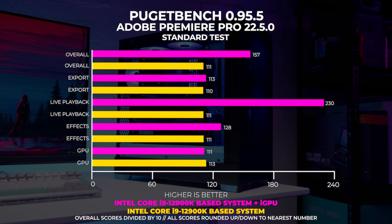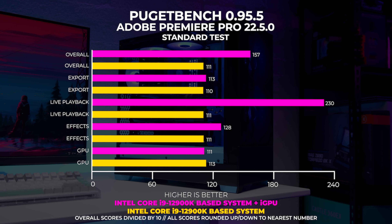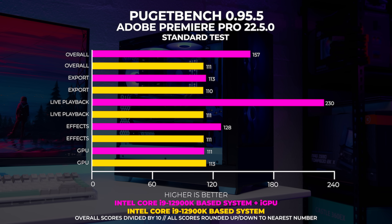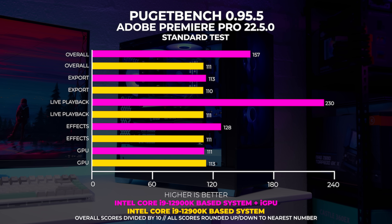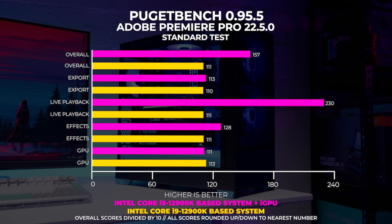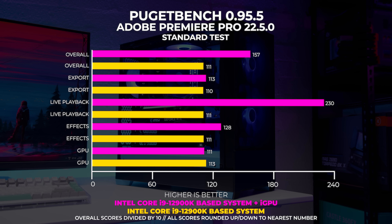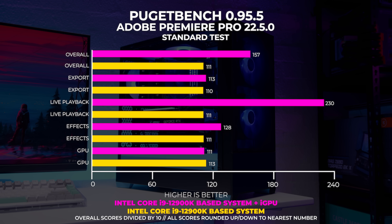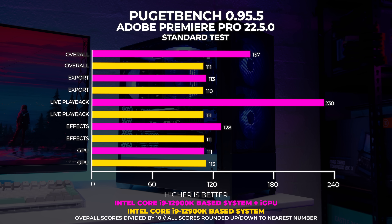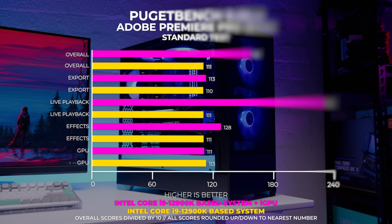What really surprised me was the live playback metric — it's more than double the performance of a no-iGPU system. This really shows the strength of Intel's Quick Sync technology. This is not sponsored by Intel. This is the only benchmark we ran on the no-iGPU system, so let's move on to something a little bit more interesting.